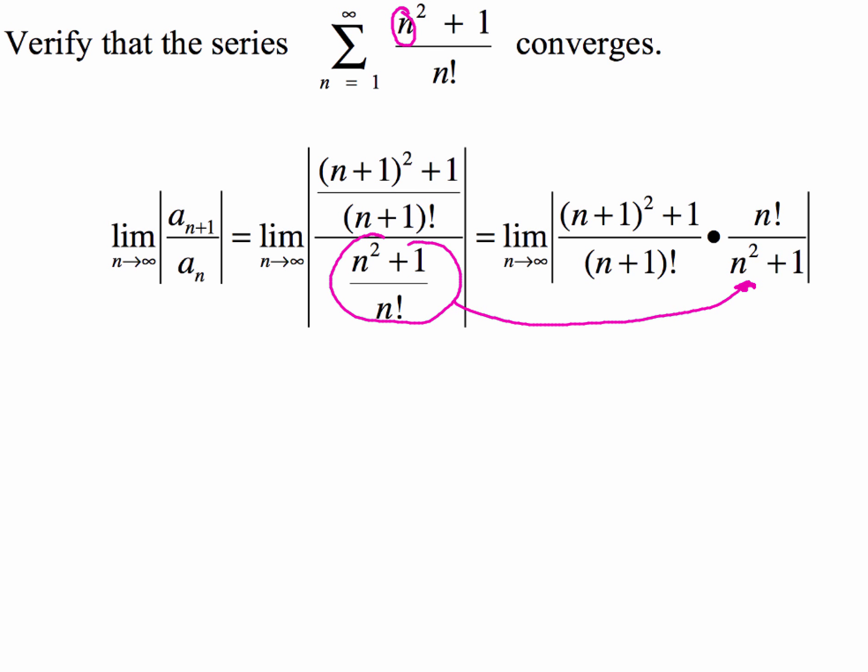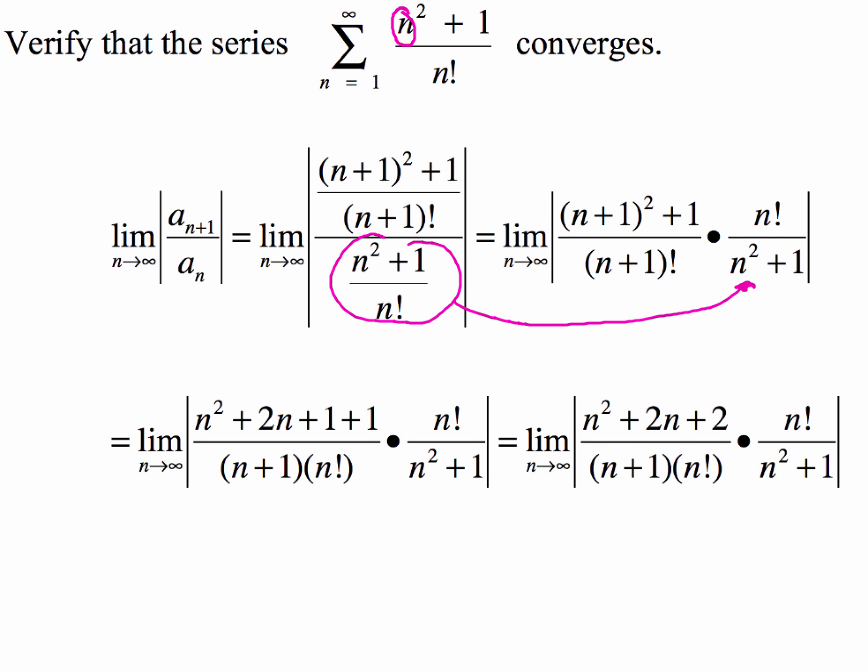Now, once we've got this limit set up and a little bit something nicer to work with algebraically, what we're going to do from here is just kind of say, all right, we're going to rewrite n plus 1 squared, we're going to actually distribute that, we're going to foil that out, or use the distributive property. And that'll give us this piece right here that's n squared plus 2n plus 1, and then don't forget the plus 1 right here, so make sure that you keep that in there. And when we combine all of that, we get n squared plus 2n plus 2, so that's what our numerator is going to be.